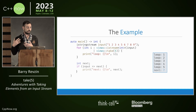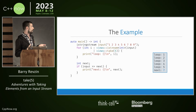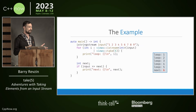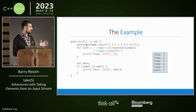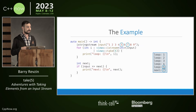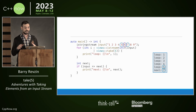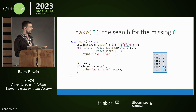So what does this print? Who thinks it prints one? No takers. Who thinks it prints six? The red might be a hint, and if it printed six this wouldn't be a very long or interesting talk. What actually prints is seven. As you might notice from my carefully chosen input, seven and five aren't exactly consecutive elements in the stream. You might wonder what happened to the six — perhaps a better title for this talk is 'take five: the search for the missing six.' The goal of this talk is really to answer that question.